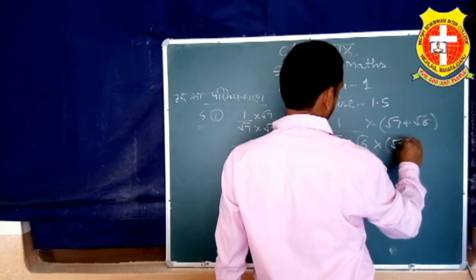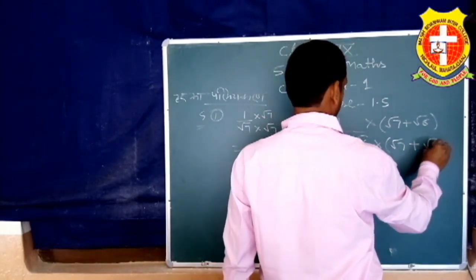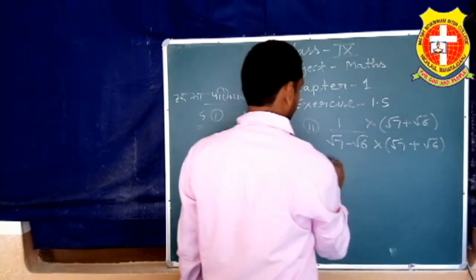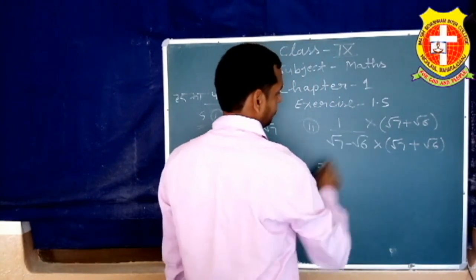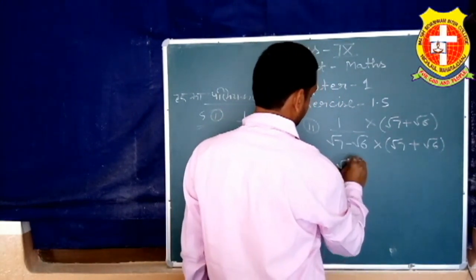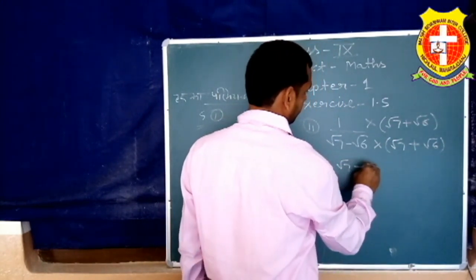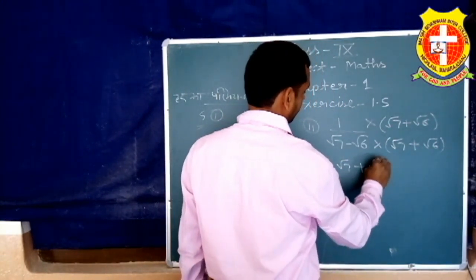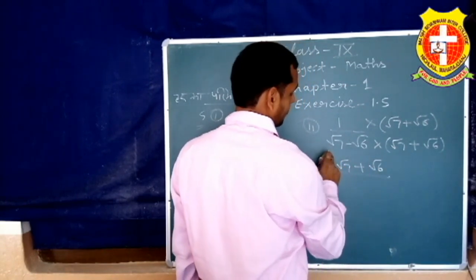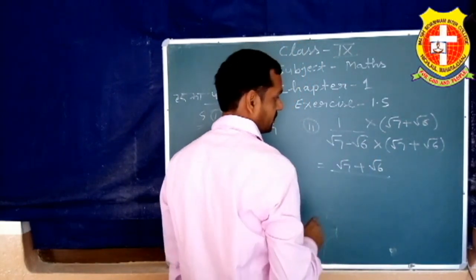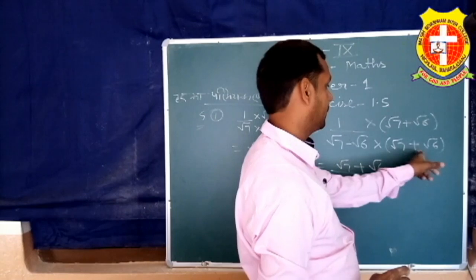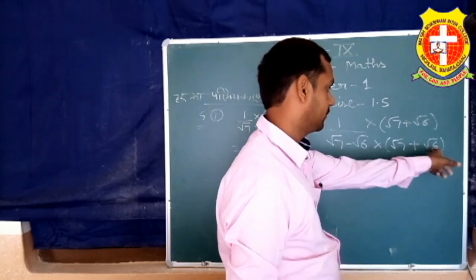तो हम अंश और हर दोनों में (√7 + √6) से गुणा करेंगे: 1/(√7 − √6) × (√7 + √6)/(√7 + √6)। हर में हो जाएगा (√7 − √6)(√7 + √6)।